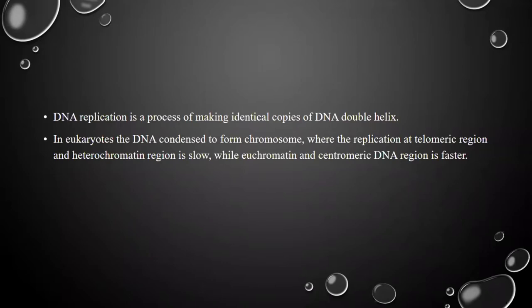हमें पता है कि chromosome में चार तरह के regions होते हैं: heterochromatin region, euchromatin region, centromeric region, और telomeric region। Telomeric region सबसे end में होता है। Heterochromatin region में non-coding sequences होते हैं, जबकि euchromatin region में coding regions होते हैं। Centromeric DNA primary satellite की तरह काम करता है। DNA replication euchromatin और centromeric region में faster होती है, जबकि heterochromatin और telomeric region में slower होती है।